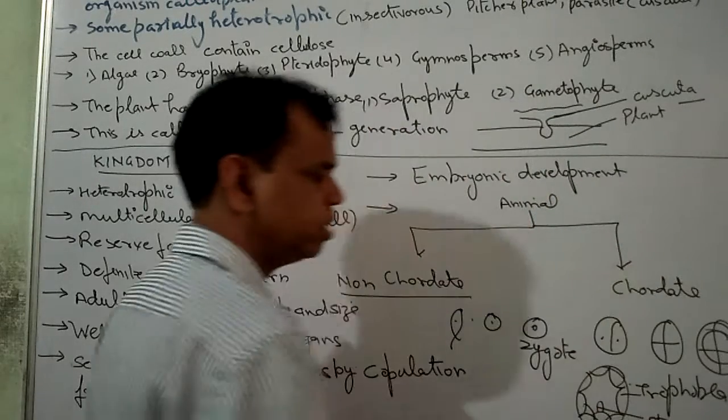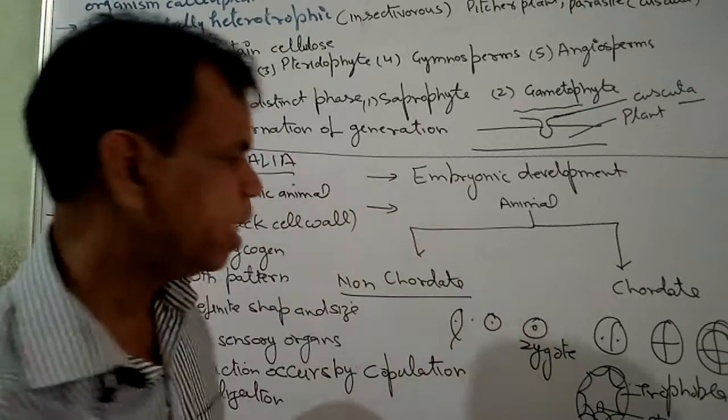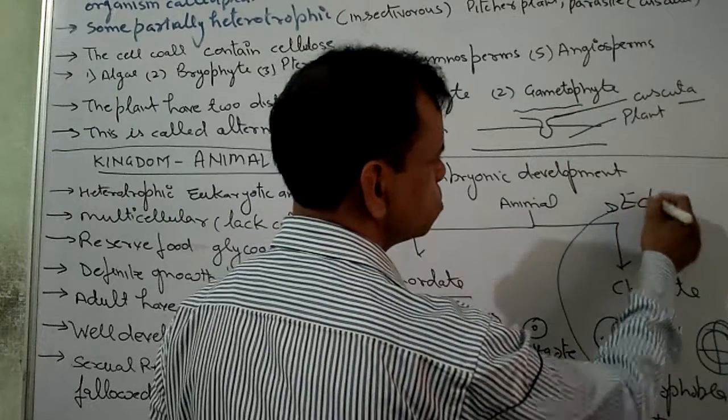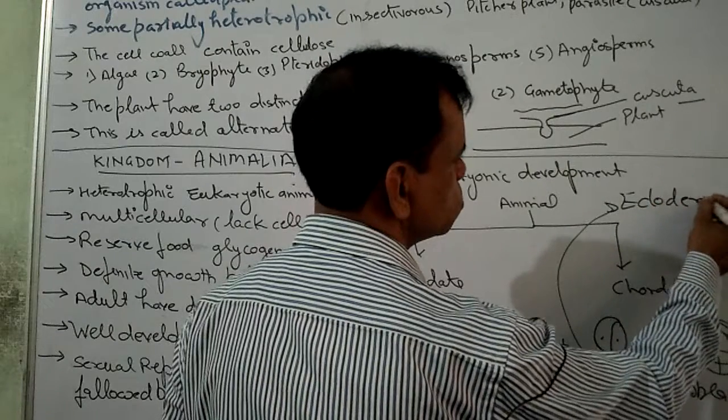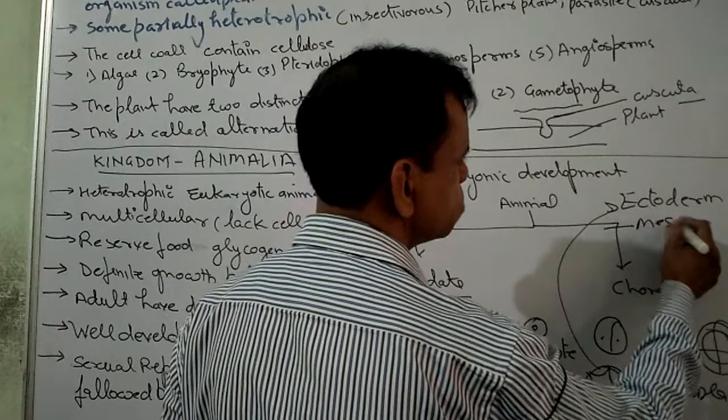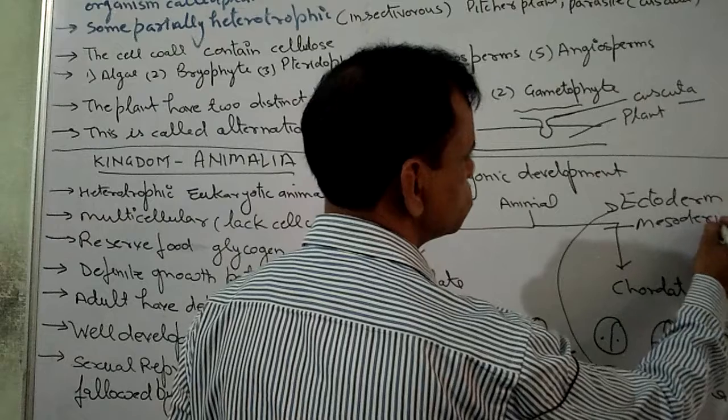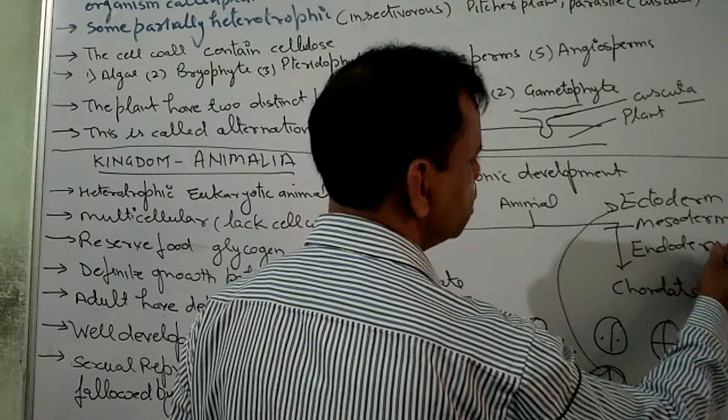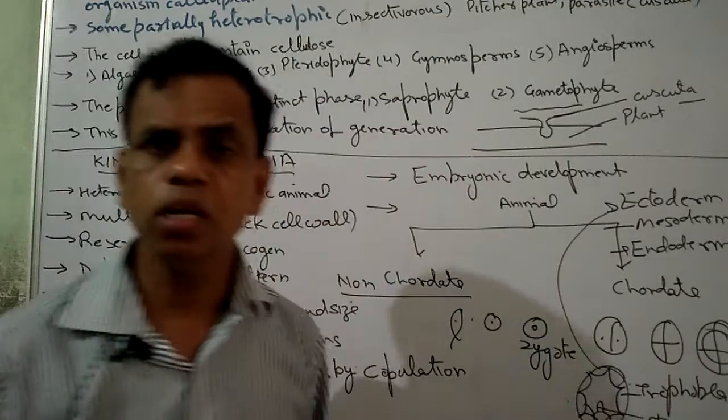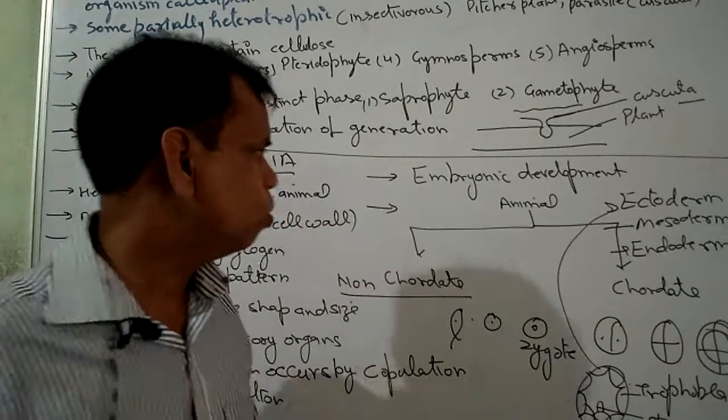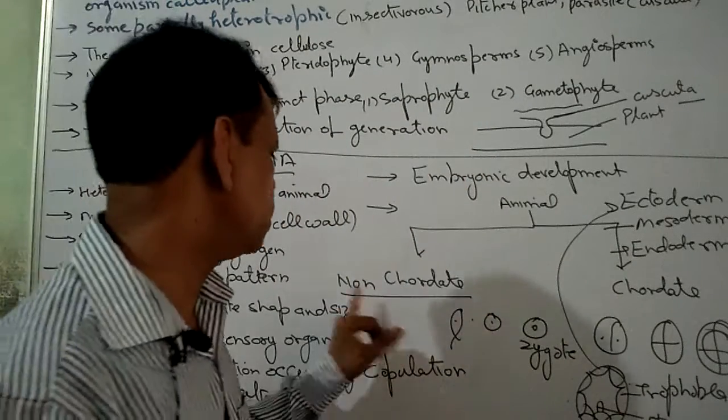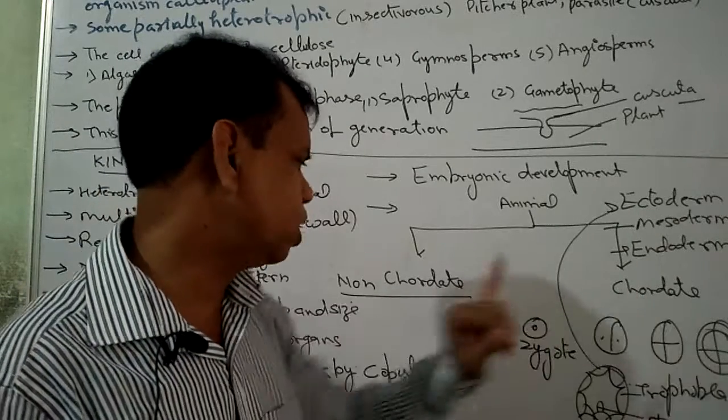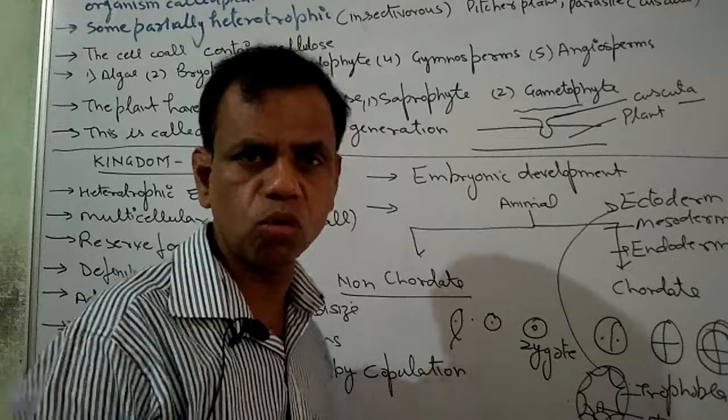It changes the layers into stem cells. These stem cells form three layers: ectoderm, mesoderm, and endoderm. Based on these three layers, then the animals are non-coelomates and coelomates, which are acoelomates, pseudocoelomates, and coelomates.